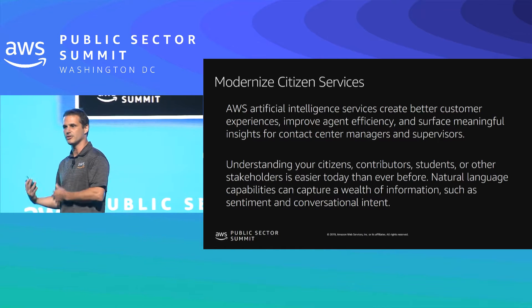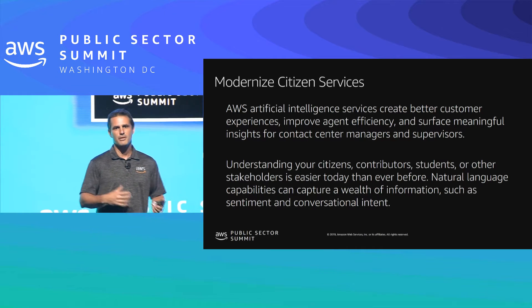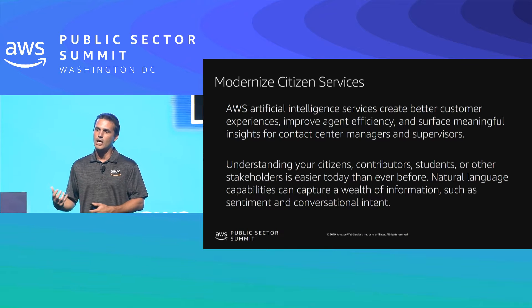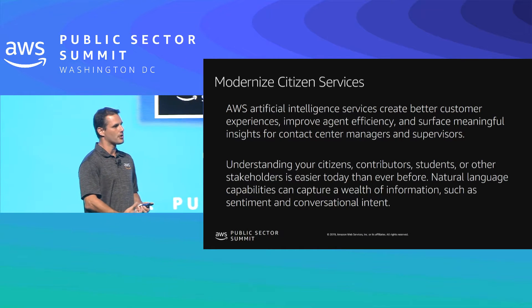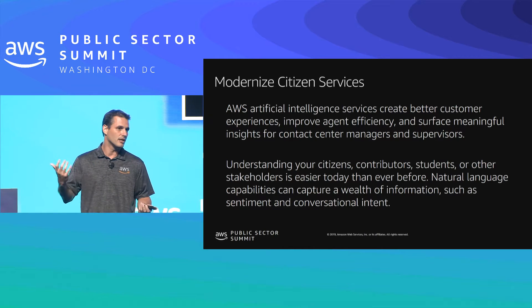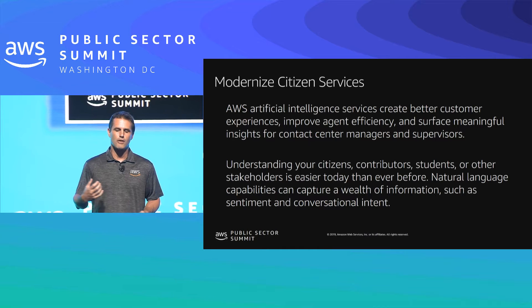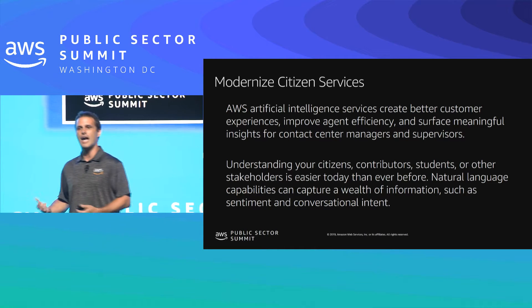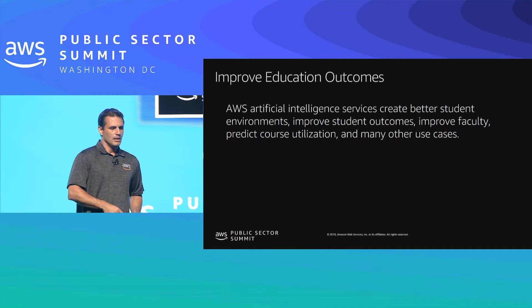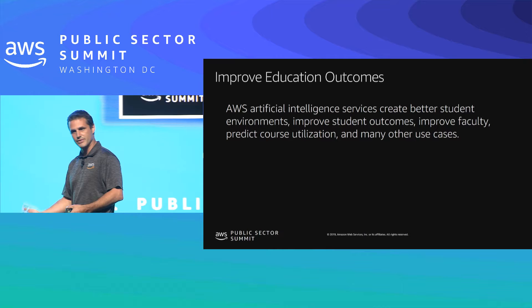One of the first examples is modernizing citizen services, specifically how to build a contact center that's intuitive and responds well to callers — whether those are citizens trying to get help, or other use cases within nonprofits or edtech. It's all about using AI services to understand what's happening, what the sentiment is, what negative themes are being discussed, and what entities are related. In the education space, we'll talk about how to use AI to better provide student services.